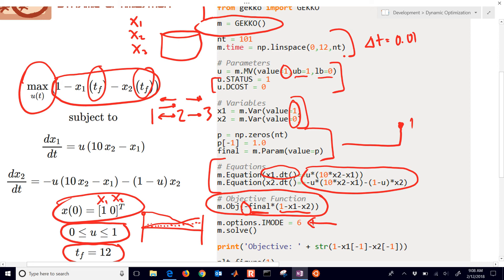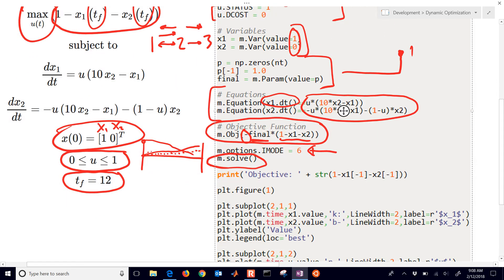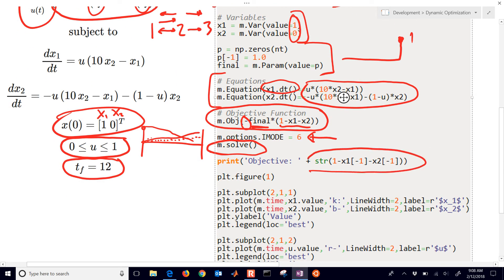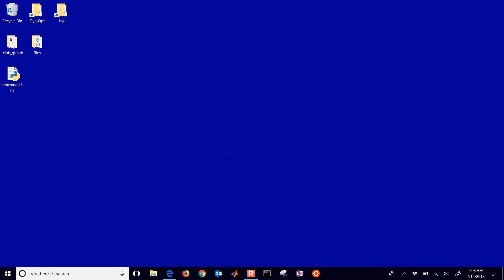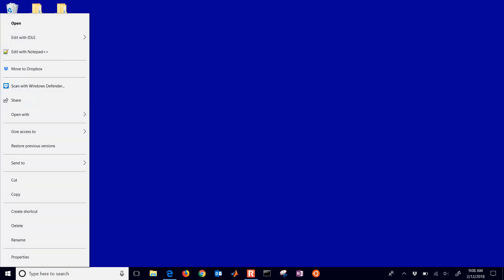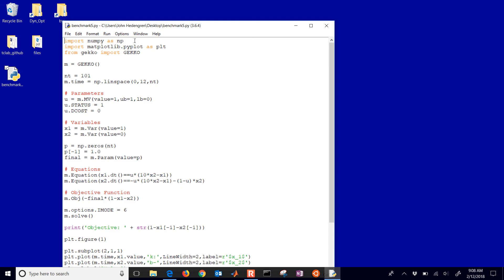This means dynamic optimization for iMode equals 6. And then I solve it. Now here's my objective right there. And then I'm just going to plot the x1 and x2. I'll show you how to add x3 as well, if you'd like to do that. There's my u value as well. And then I'll show the plot. So let's go and run this. And then we'll modify it a little bit just to add x3 in there.